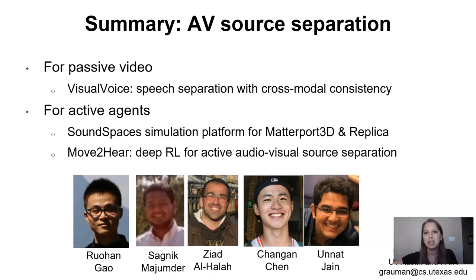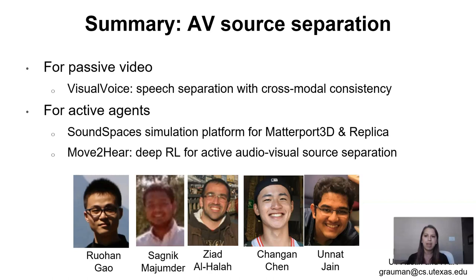In closing, we've tackled audio-visual source separation on two fronts: first in a passive way, parsing existing video for different speakers; and then in the active scenario — a new task for embodied AI — where agents move about a space to hear things more clearly. Along the way we contributed the Sound Spaces environment, available for audio-visual and active perception work. Everything shown today was done with many collaborators, including Rohan, Sagnik, Ziad, Chanan, and Unat, who are key contributors and first authors on the work presented. Thanks so much for your attention.